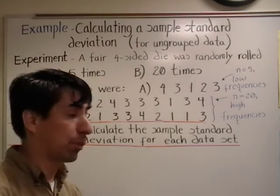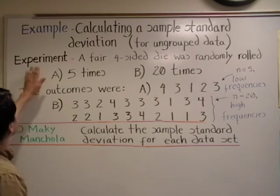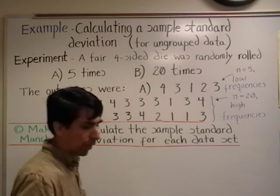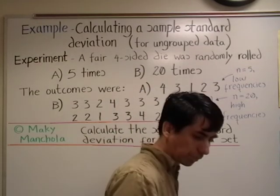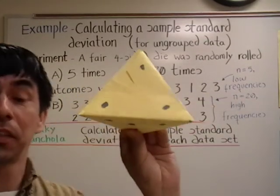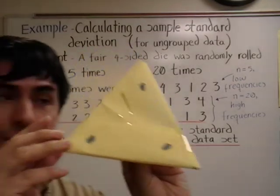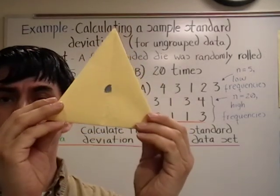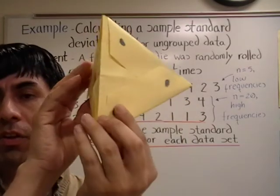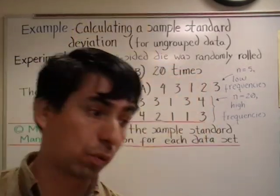Our example is based on the following experiment. A fair four-sided die was randomly rolled. Here is a four-sided die — it has four sides: one, two, three, and four. So the experiment is to roll one of these.